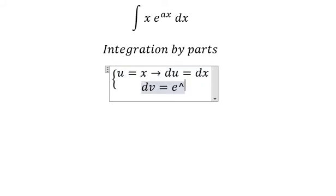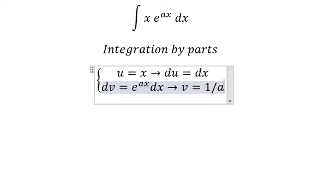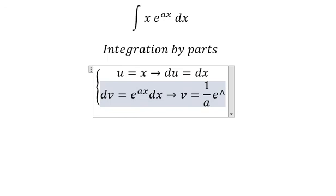We have dv equals e to the power of ax dx. The integration of this gives us v equals 1 over a times e to the power of ax.